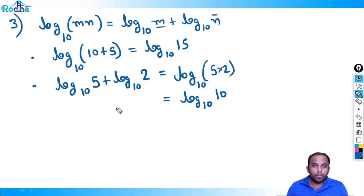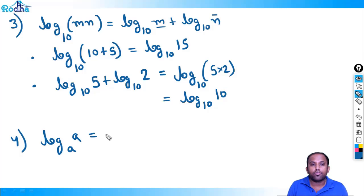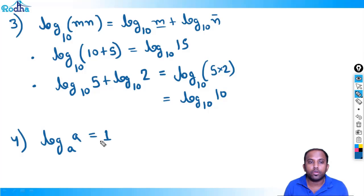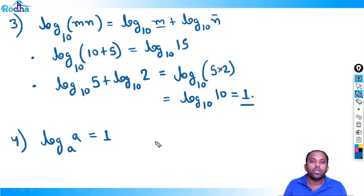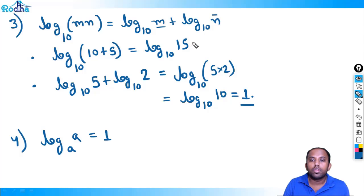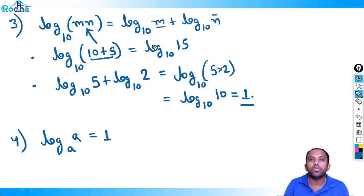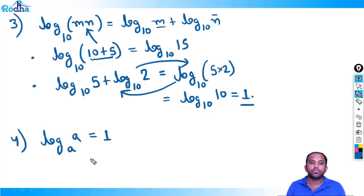Fourth property of log: when the base and argument of log are the same, log_a(a) equals 1. So log_10(10) equals 1. Whenever base and argument of log are the same, the value is 1. Note that log_10(10 + 5) cannot use this property — it must be multiplication inside, not addition, for the product rule to apply.